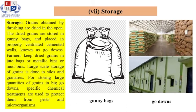When crops are stored on a large scale, it is known as macro-level storage. For this purpose, grains are first sun-dried and then kept in gunny bags or jute bags. After this, they are placed in ventilated cemented structures.